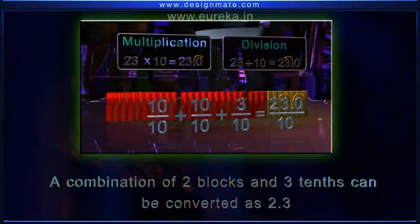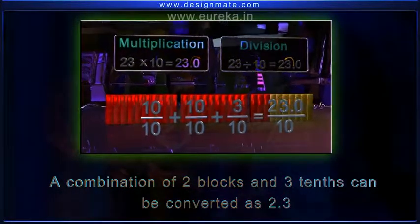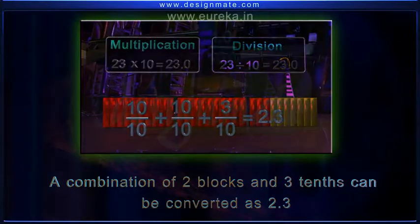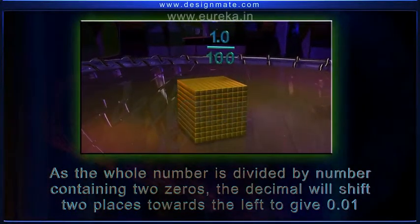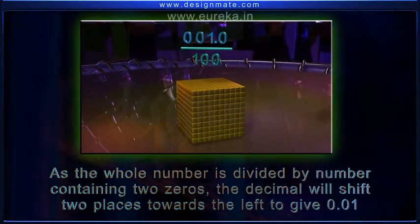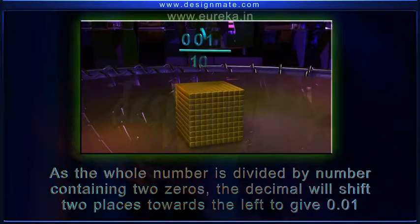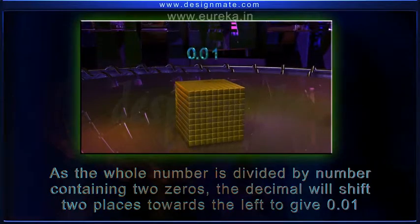A combination of two blocks and three tenths can be converted as 2.3. As the whole number is divided by a number containing two zeros, the decimals will shift two places towards the left to give 0.01.